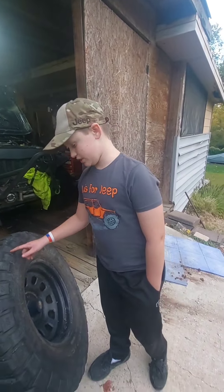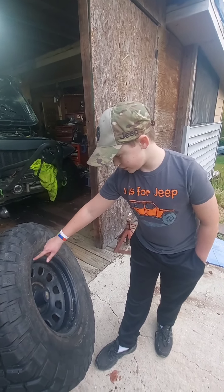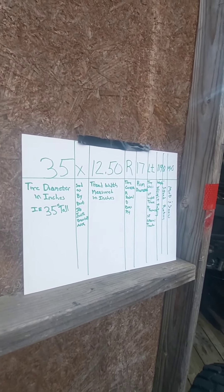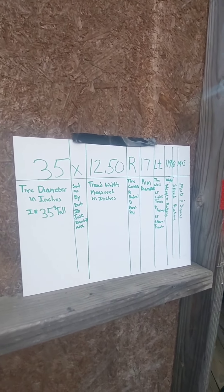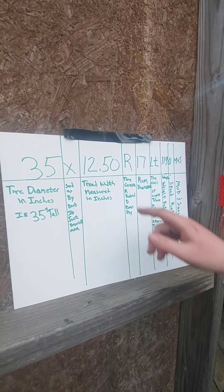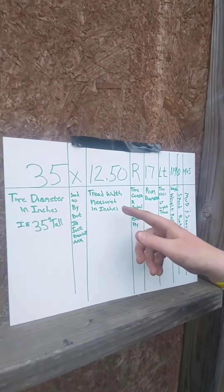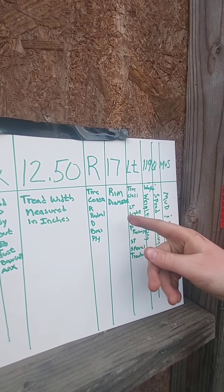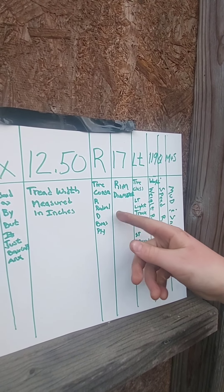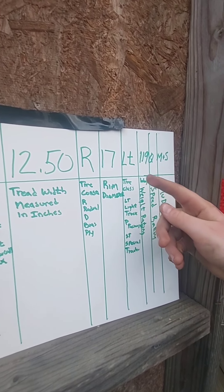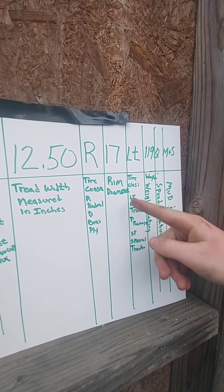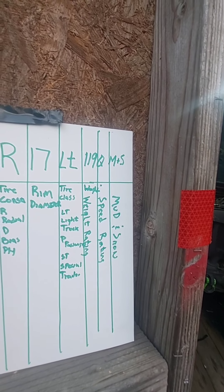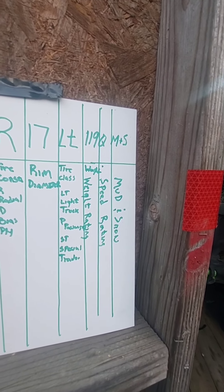This second tire is measured in inches — it's a 35 by 1250 R17 LT. The first number, 35, is your tire diameter or tire height: 35 inches tall. Next is 1250, which is tread width measured in inches. Then R is tire construction — radial — or D for bias ply. Next is 17, which is your rim diameter. And LT, just like on the other tire, stands for light truck — that is your tire classification. You also have P, ST, and T.